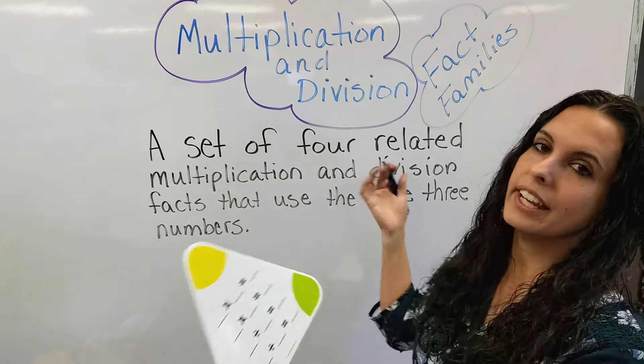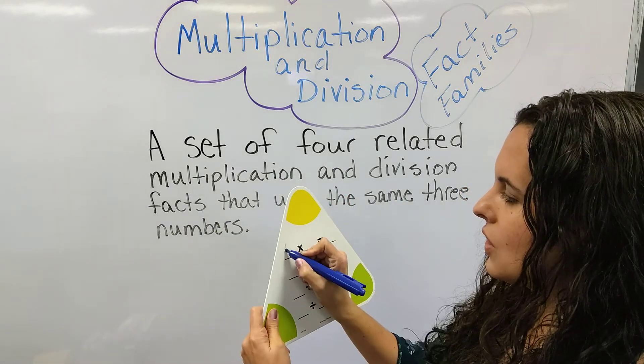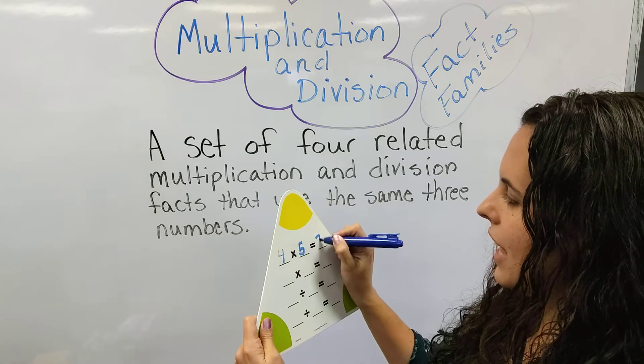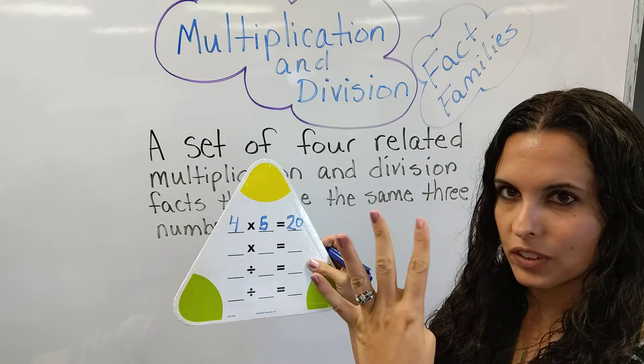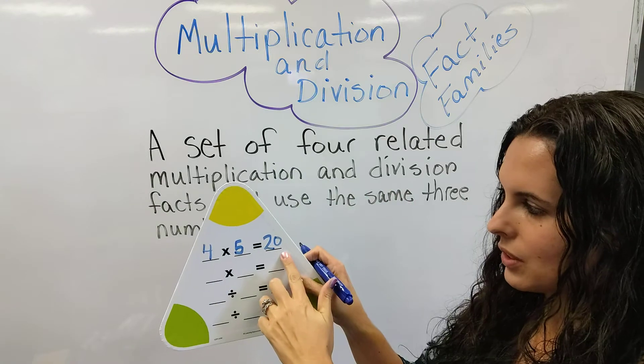So let's go ahead and we'll do a multiplication problem. Let's do 4 times 5 and that equals 20. So we like to count by 5, so we get 4 fingers, count by 5: 5, 10, 15, 20. So we know it's 20.